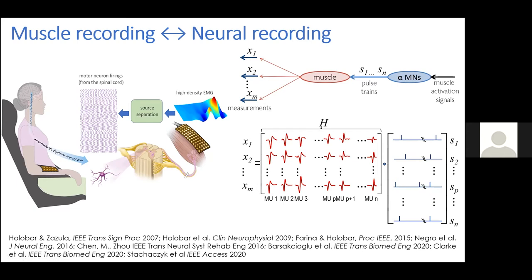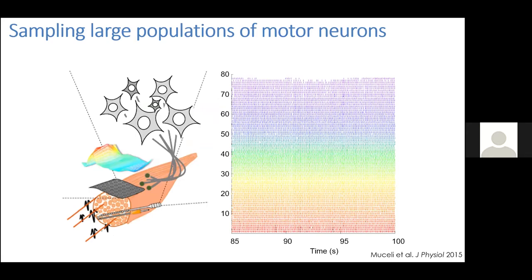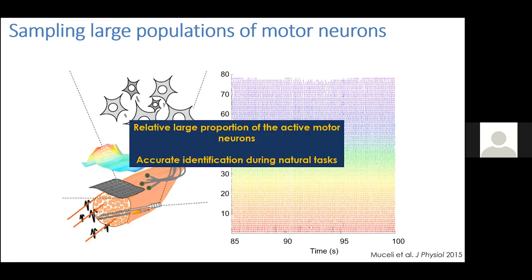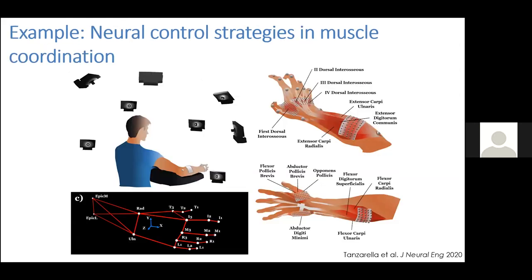This can now be done in a quite accurate and robust way. Compared to the Basmajan study, we now have access to motor neurons in the spinal cord in quite large numbers during natural movements in humans and also in animals. You can see the decoding of almost 80 motor neurons with this type of technique. We can use these to study muscle coordination — specifically, from the neural structure that determines muscle activity.